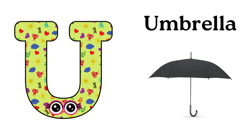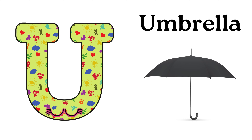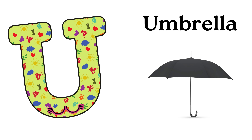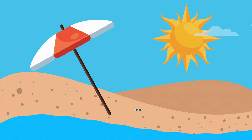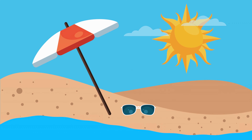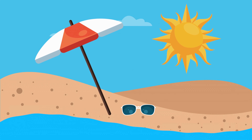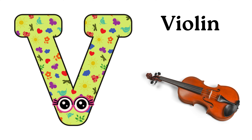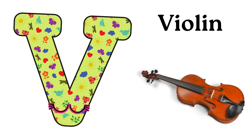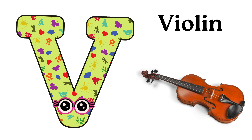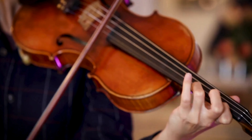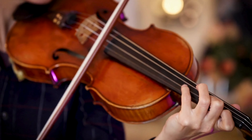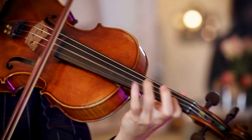U is for Umbrella. U-Umbrella, U-Umbrella. V is for Violin. V-Violin, V-Violin, V-Violin.